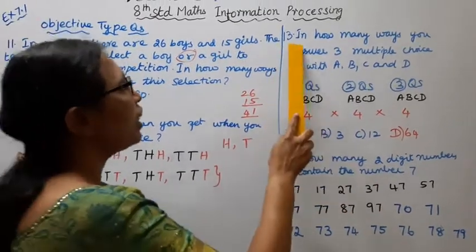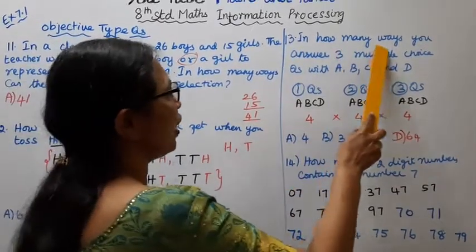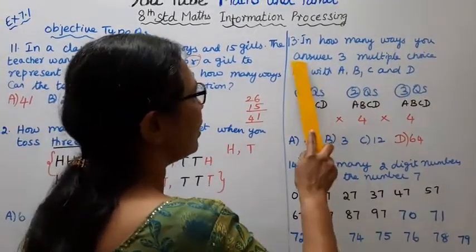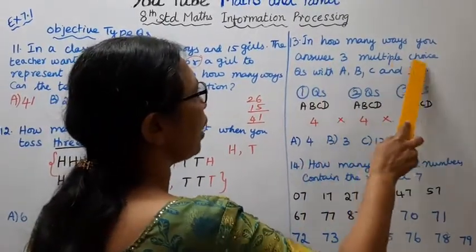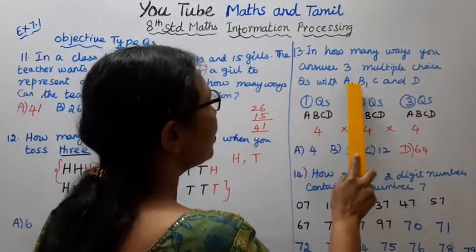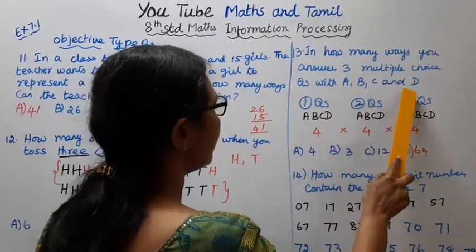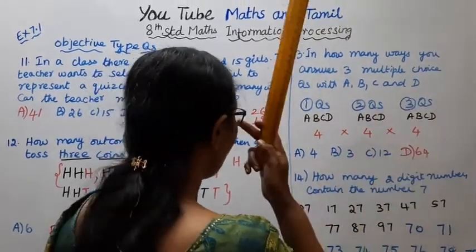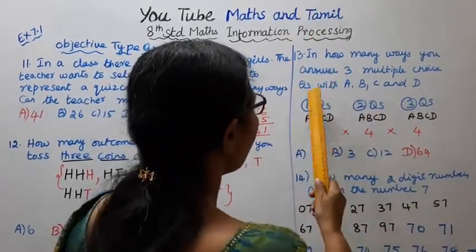Question 13: In how many ways can you answer 3 multiple choice questions with options A, B, C, D?